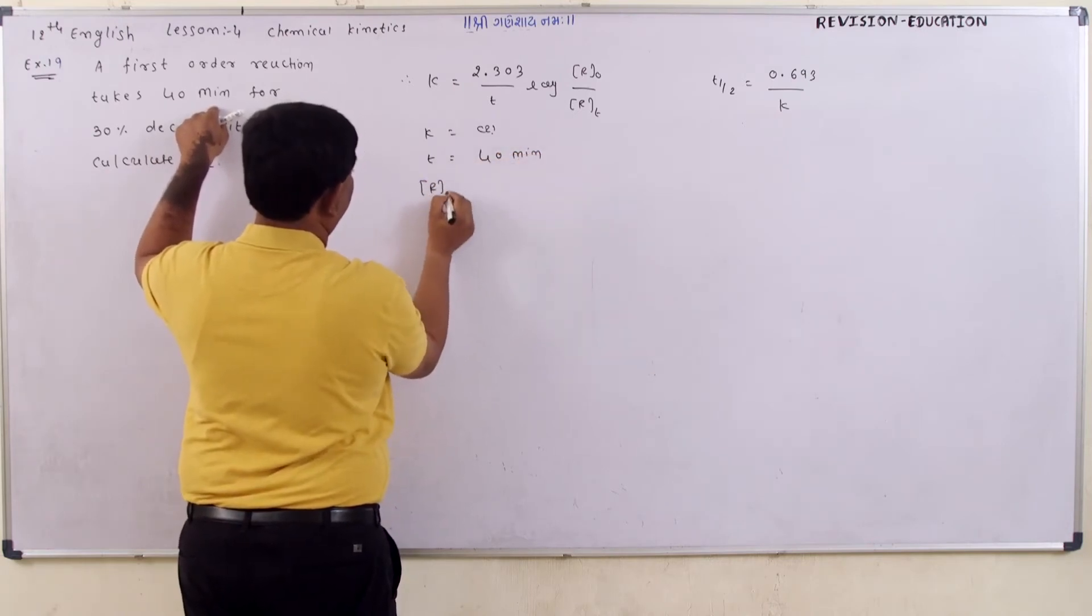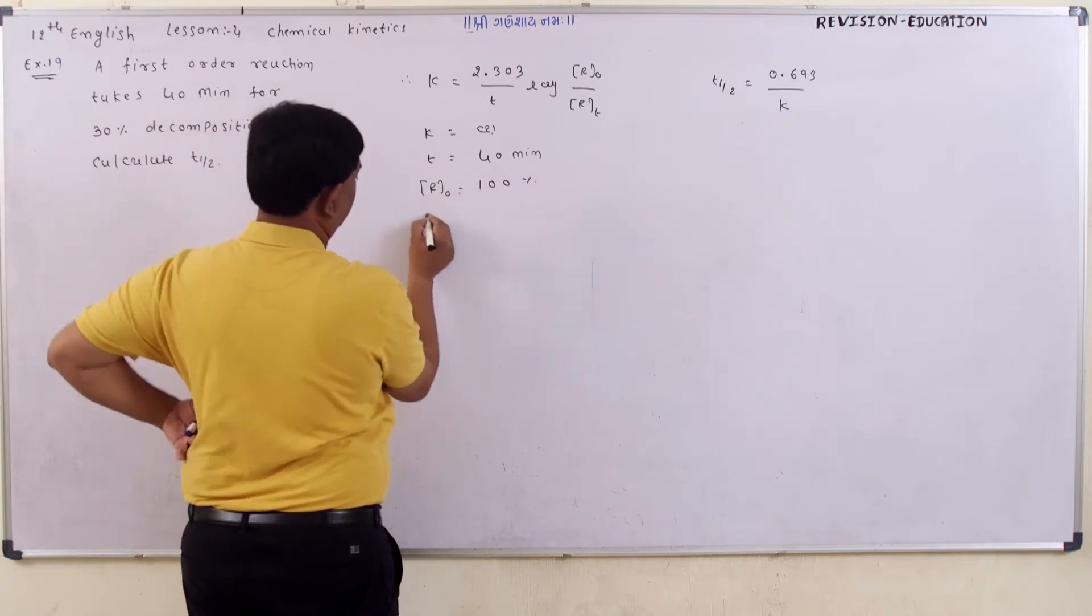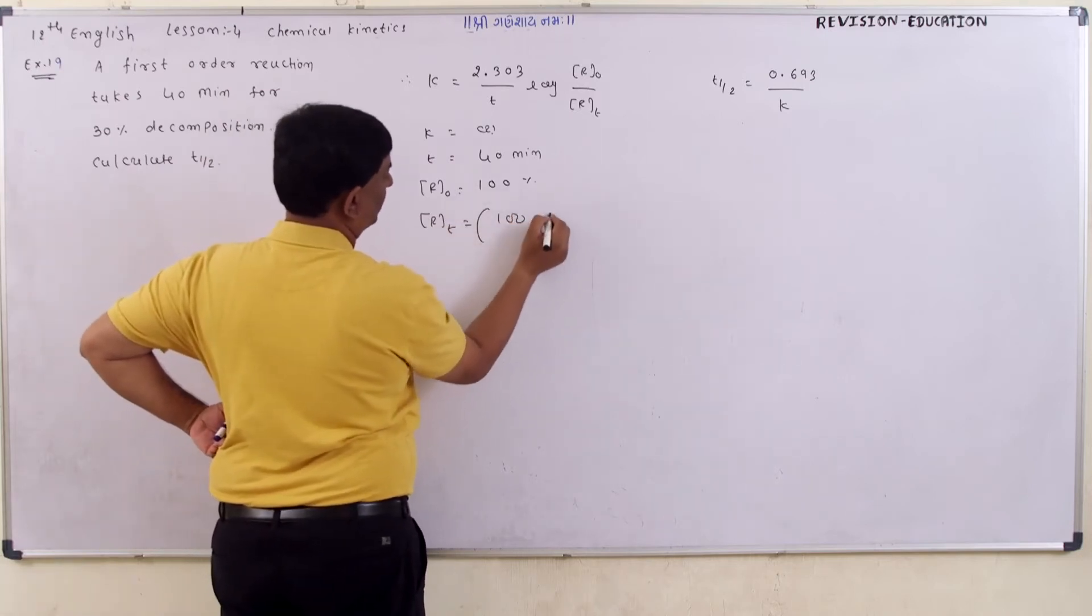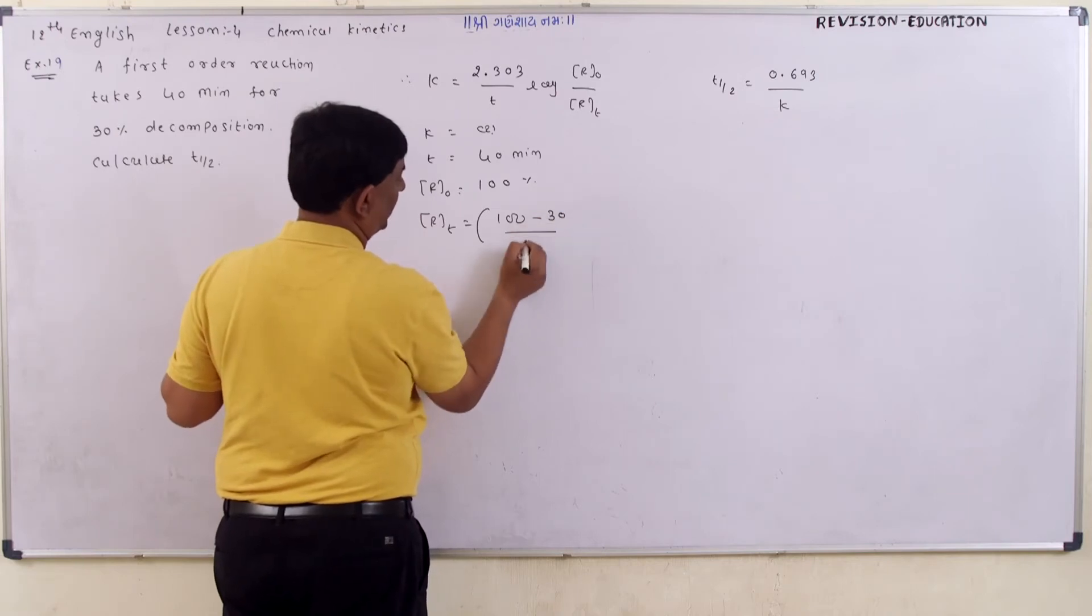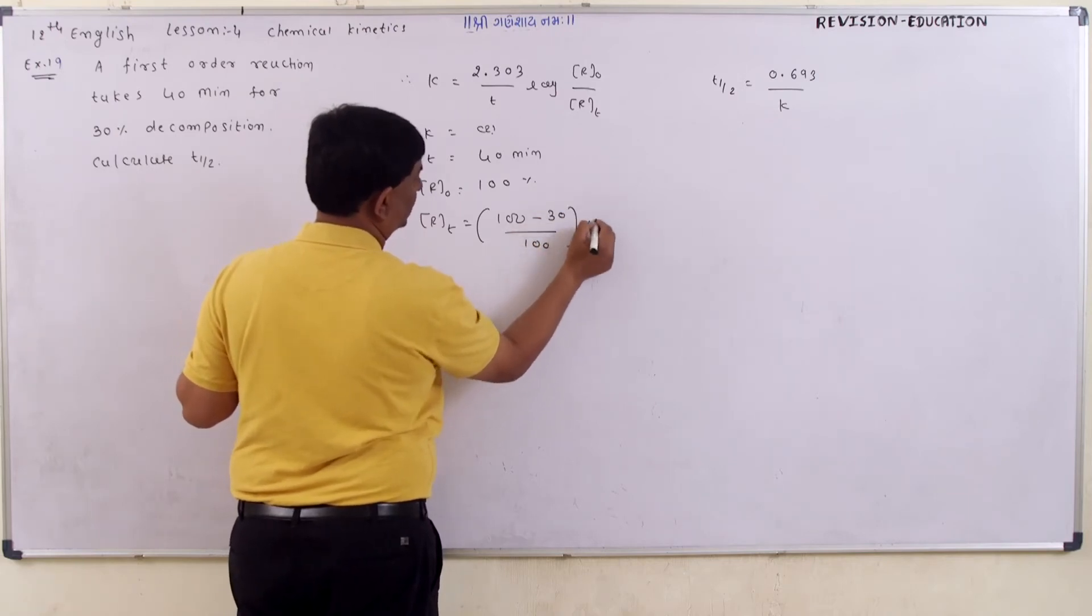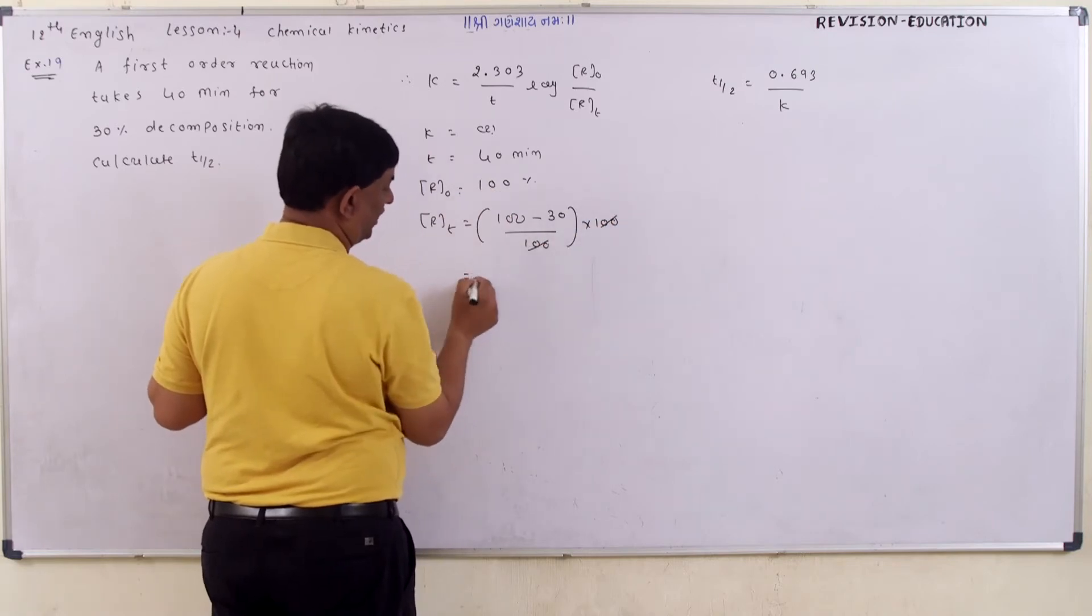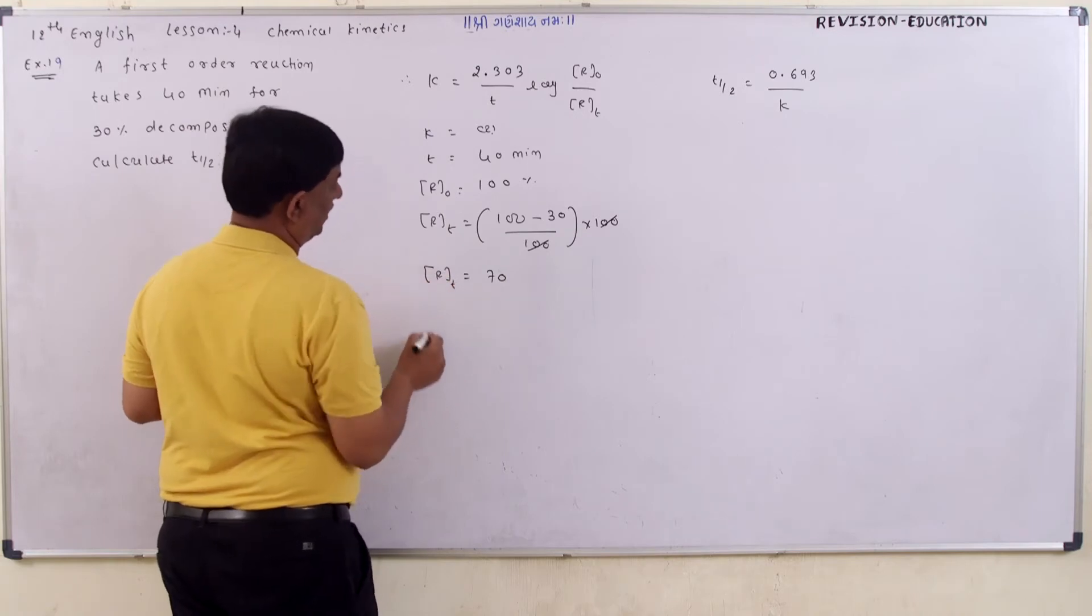What is the initial concentration? We assume it as 100 percent. How we can calculate rt? 100 minus the given percentage, 30 percent, divided by 100 into initial concentration of 100. It cancels and becomes 70.